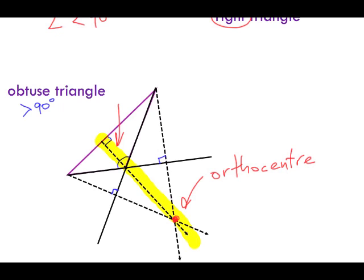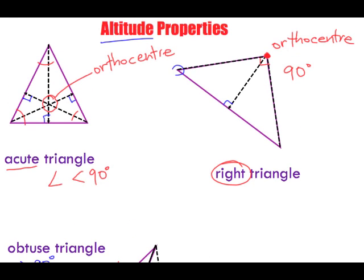To summarize: in an obtuse triangle, the orthocenter is outside of the triangle. In a right angle triangle, the orthocenter is right at the vertex of the 90 degree angle. In an acute triangle where all angles are less than 90 degrees, the orthocenter is found within the triangle. In all cases, the altitudes form 90 degree angles, drawn from each vertex to the opposite side.